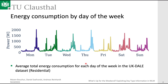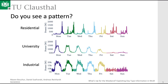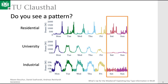Putting all previous plots together, we can compare the three datasets. For BLOND and HIPE, energy consumption is clearly much lower on weekends, whereas this is not the case for UKDALE, where the weekend-versus-workday distinction is different in character.